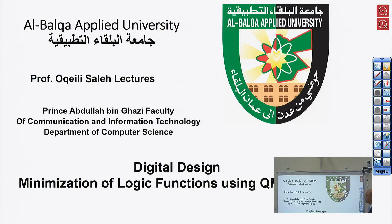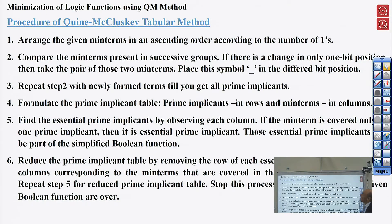Hello again. Today we start our next topic on digital design course: minimization of logic functions using the QM method, also known as the Quine-McCluskey tabular method. This method is good if the number of variables is five or more. As you noticed in the last lecture, minimization using K-maps with more than five variables is difficult. This method is also programmable.